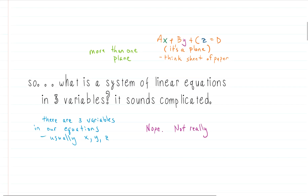So let's start with our review. The first thing we should probably talk about is what is a system of linear equations in three variables. That's a lot of math language and it kind of sounds complicated, but it really isn't. The three variables part just means we have three variables in our equations — usually x, y, and z, though they can be anything.